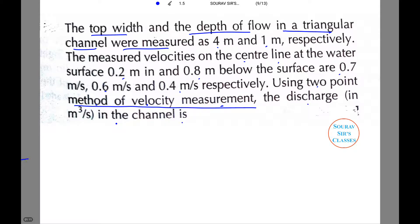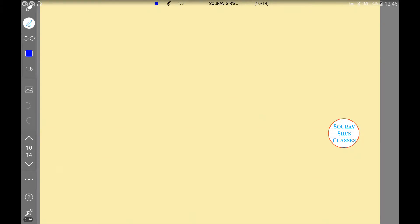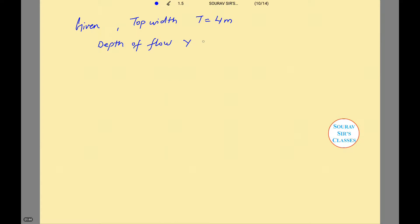Let us move on to the solution. Given: top width T = 4 m, depth of flow y = 1 m, v₀.₂y₀ = 0.6 m/s, v₀.₈y₀ = 0.4 m/s, and v₀.₅y₀ = 0.7 m/s. All these values are provided to us or derived from the question. Now we need to find the discharge Q.